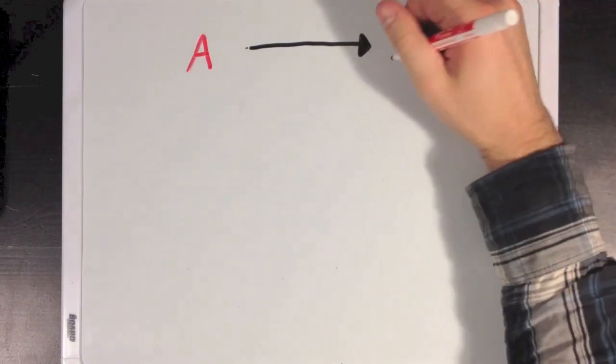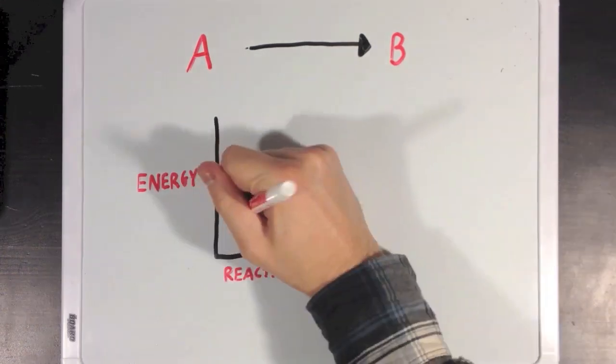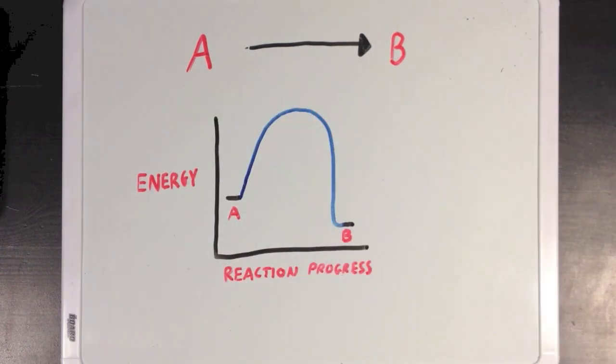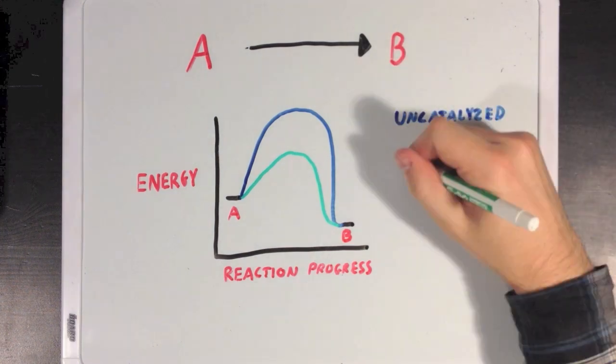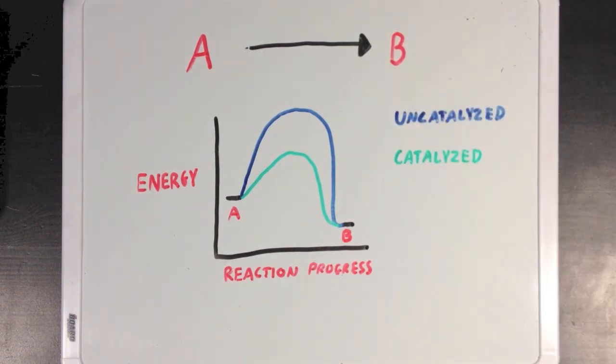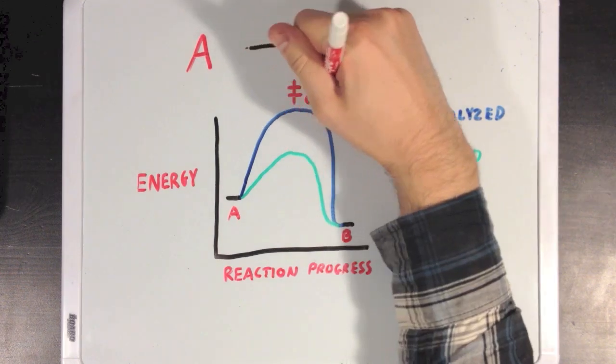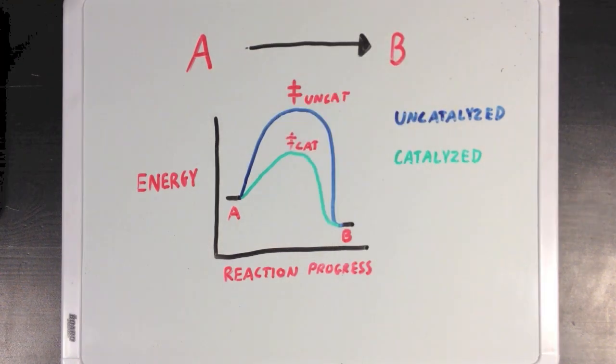So let's go back to our example from before with our reaction coordinate diagram. But now, let's say that the reaction has a catalyst. So with the catalyst, the activation energy barrier that molecule A has to overcome in order to get to point B is much smaller. And this will mean that your reaction will have a transition state with a much lower energy, meaning that it's more stable with the enzyme, and also that the reaction as a whole will have a much lower activation energy.